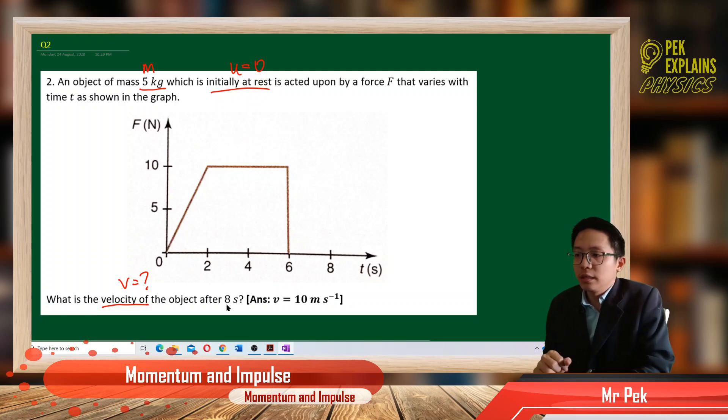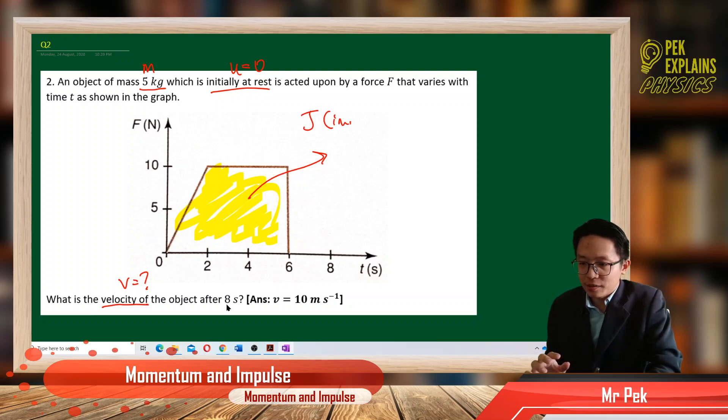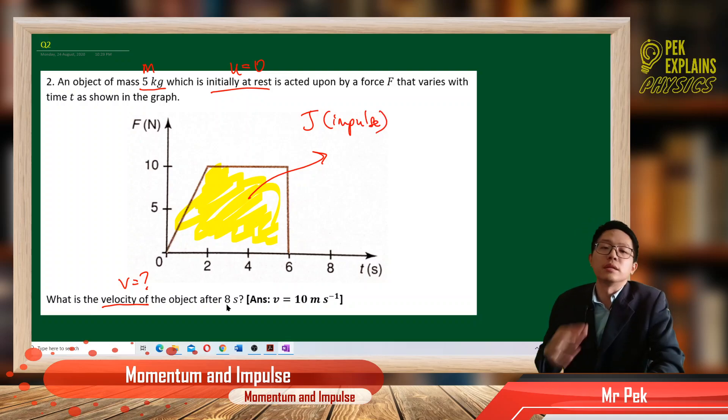One important thing the force-time graph tells us is the area under the graph. What is meant by area under the graph? Area under force-time graph is actually the impulse. J is the symbol for impulse. So impulse is actually area under force-time graph.